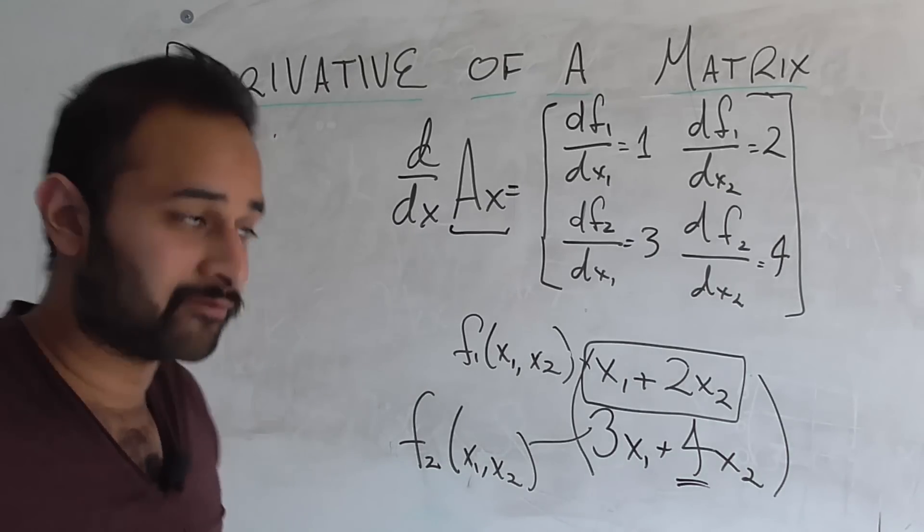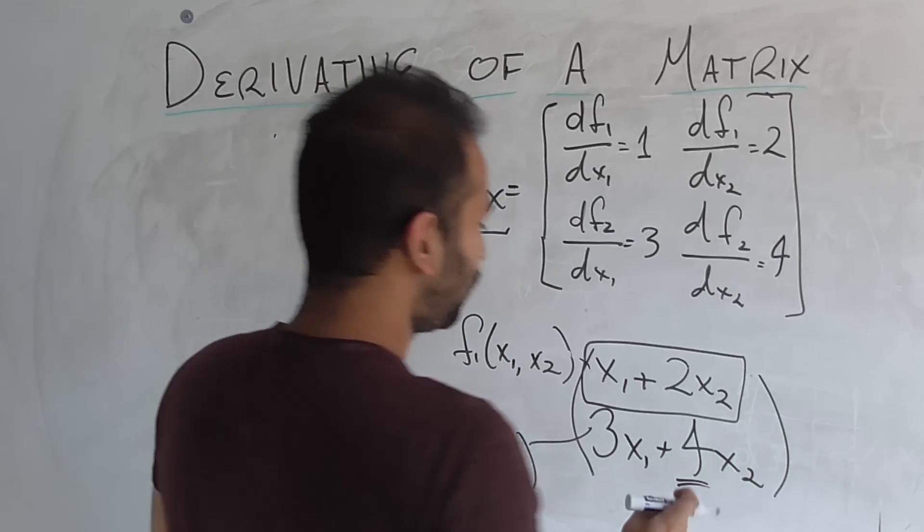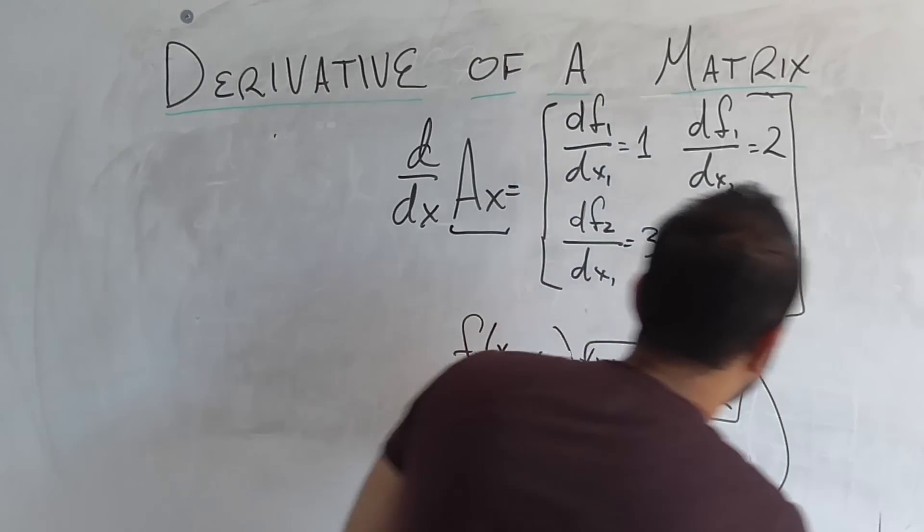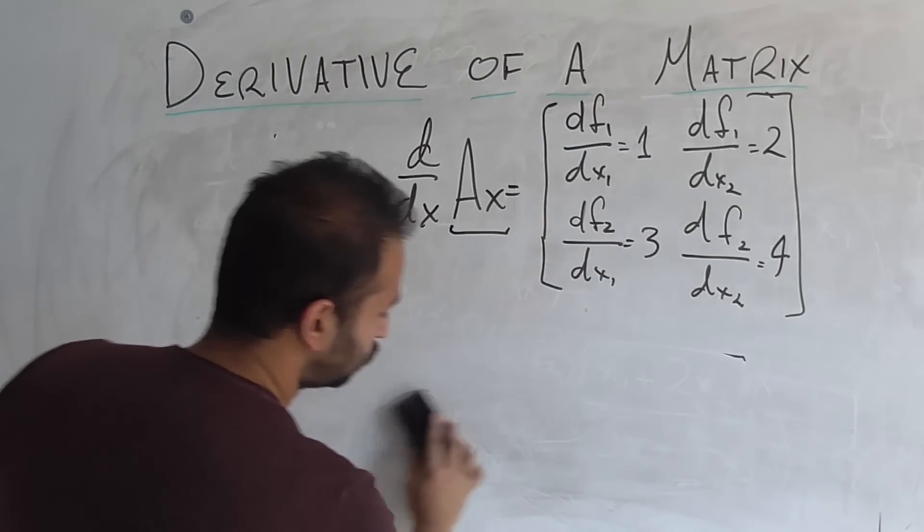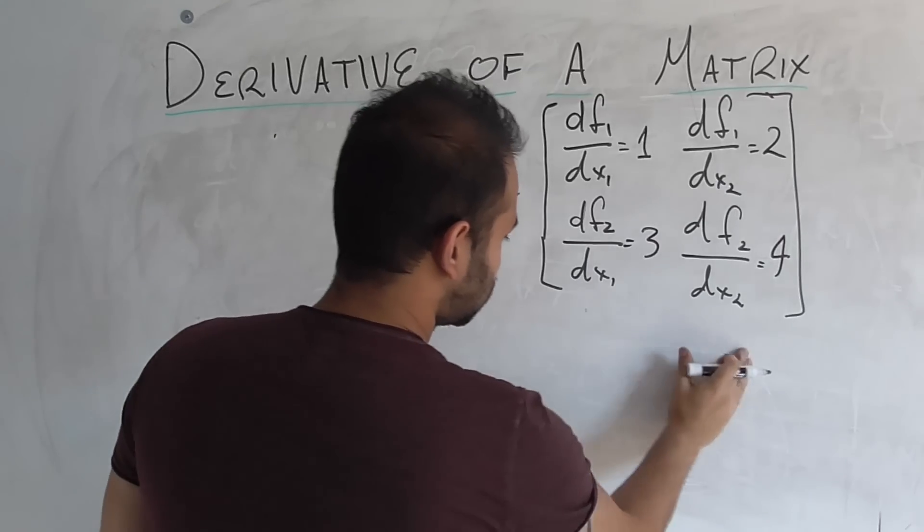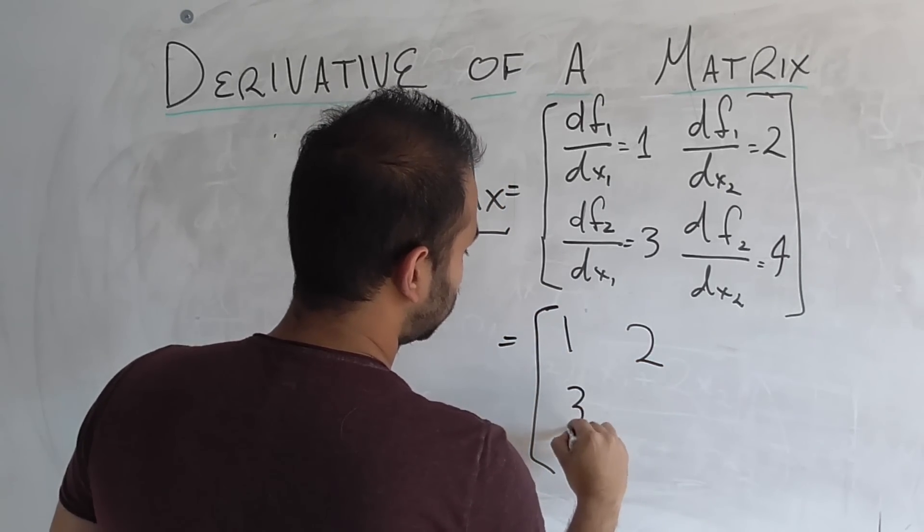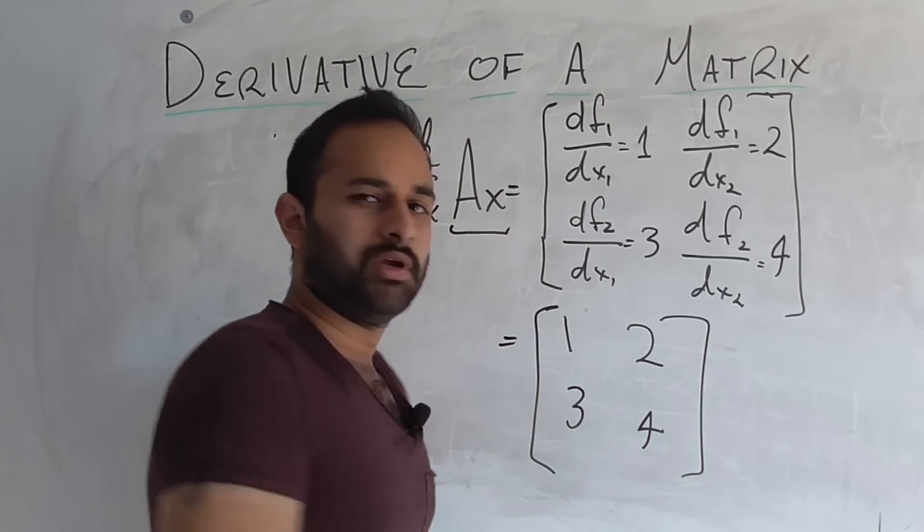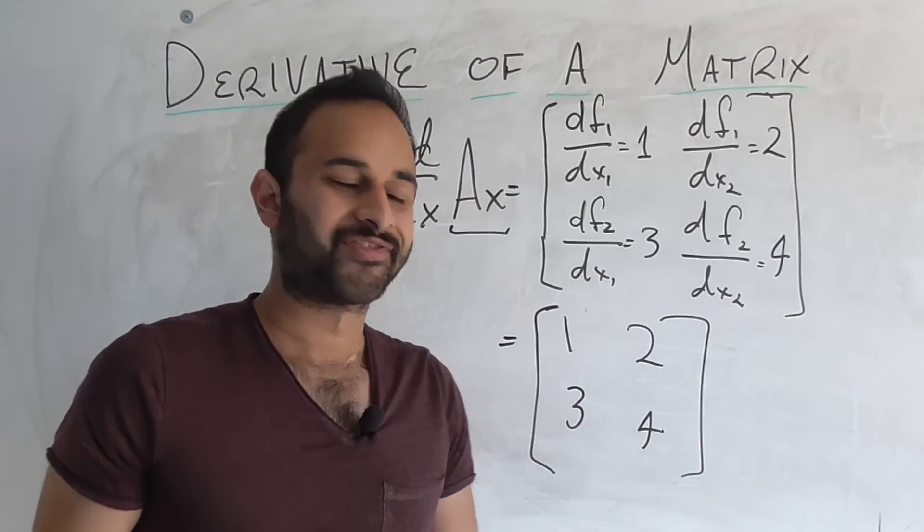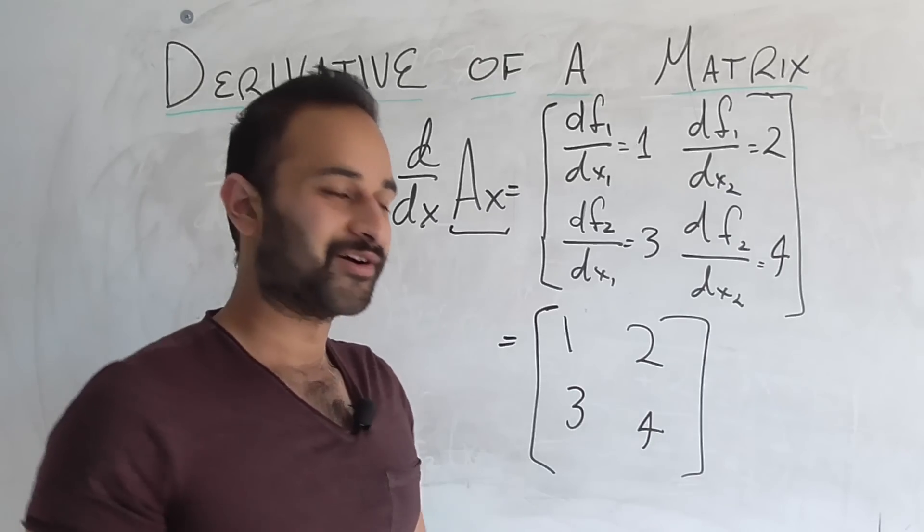So we're taking the derivative of this linear transformation right here, which happens to involve matrix A. So that means that after we've done this derivative, we have found that the answer is 1, 2, 3, 4. Where did you see that matrix before? That was the original matrix A, of course.